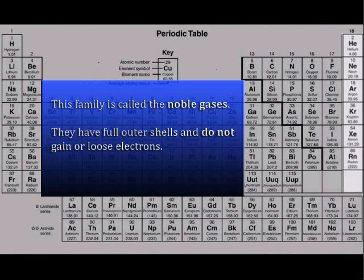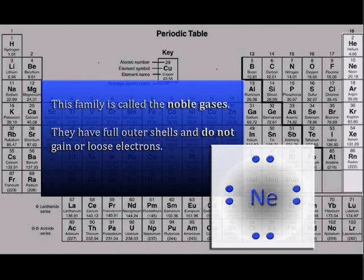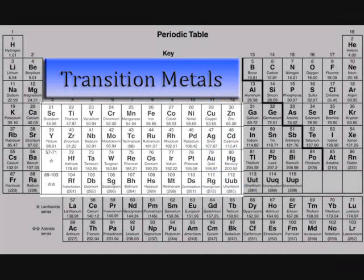The elements on the far right-hand side are called the noble gases. All of these elements have full outer shells and are happy. This means that they do not react with other elements or themselves. As you may have noticed, we kind of skipped over the transition metals. Since they are a special case, we'll talk about them a little bit later.